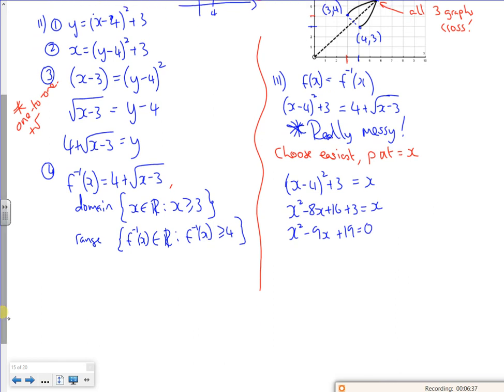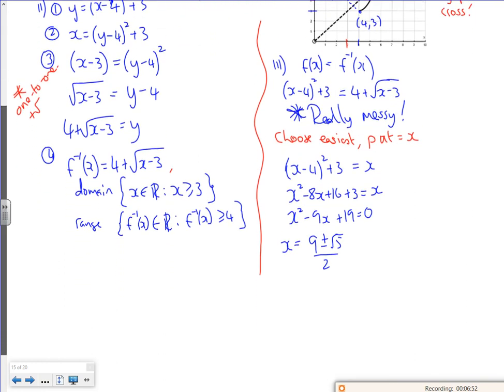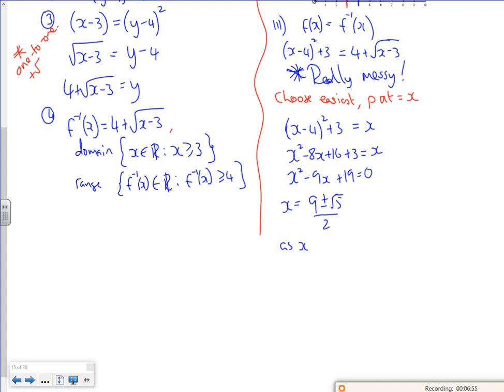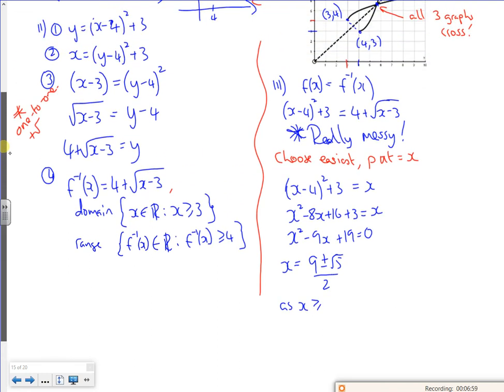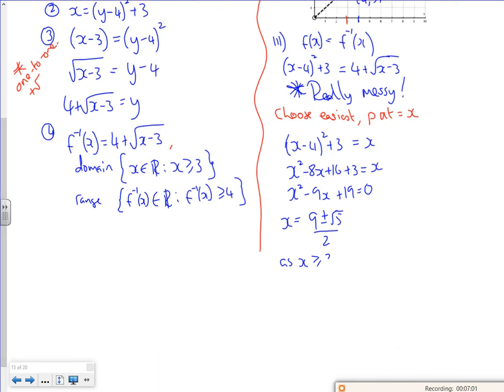I'm going to use polynomial solver and I get x is 9 plus or minus root 5 over 2. But remember the inverse is only the positive part of the answer because of how I've defined it. So as x is greater than or equal to 3, x is 9 plus root 5 over 2.